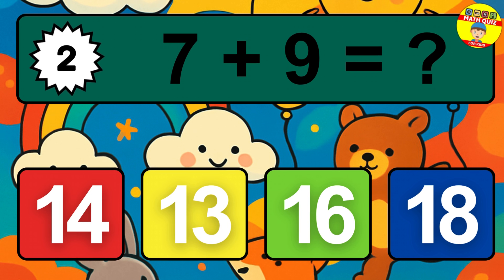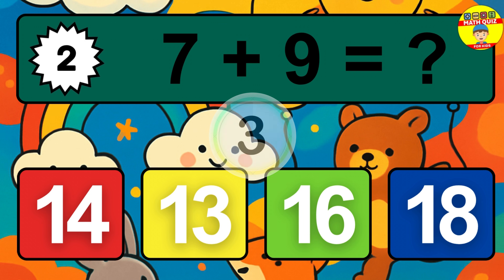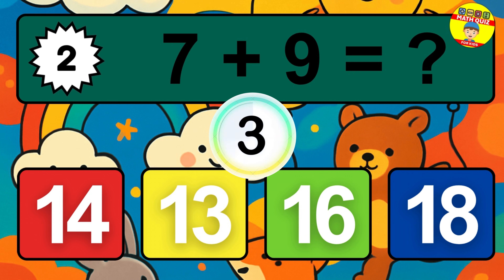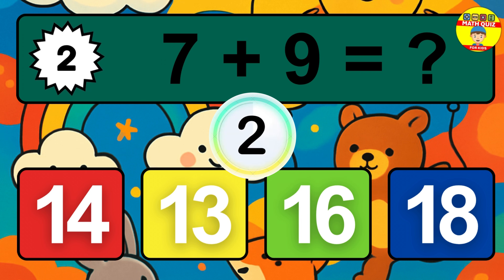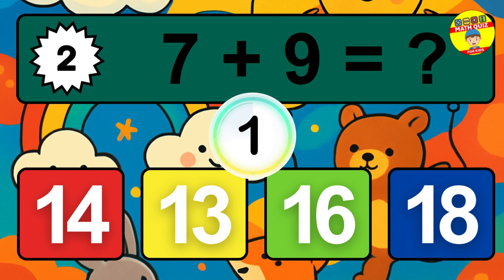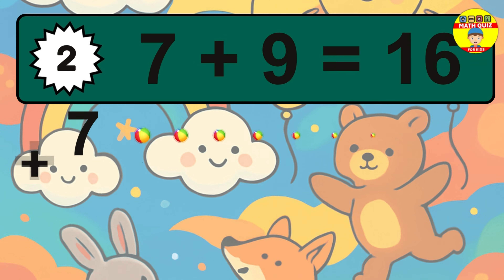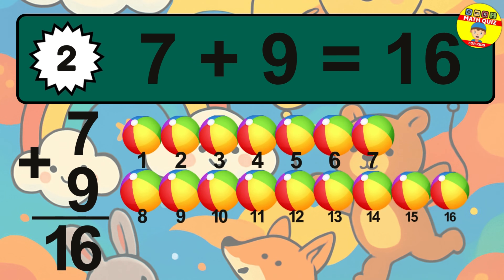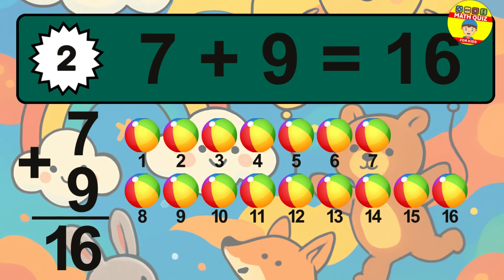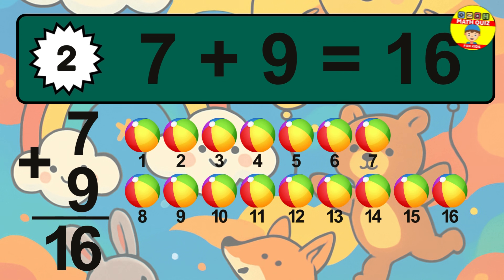Question 2. 7 plus 9 equals what? The answer is 7 plus 9 is 16. Let's count it.